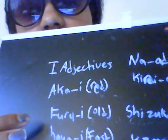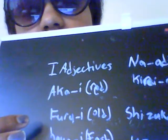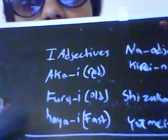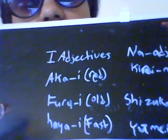Furui — that's another example of an I-adjective, which means 'old.' And hayai, meaning 'fast.' So a-kai, furui, hayai are all I-adjectives. You can see that 'i' at the end making that 'e' sound.